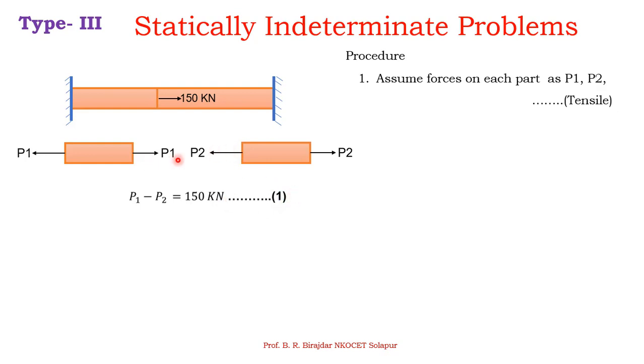Two unknowns and one equation—it's not possible to solve. Another condition we have to consider: since both ends are fixed, the total change in length of this bar remains as it is. So change in length is zero. That is, delta L—the change in length of the first body plus change in length of the second body—should equal zero.